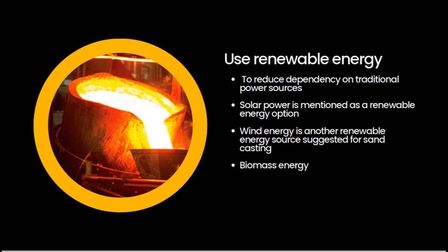Sand casting is highlighted as an efficient and environmentally friendly manufacturing process. To reduce dependency on traditional power sources, sand casting businesses can utilize various types of renewable energy. Solar power is one option, where solar panels can be installed in the sand casting plant to generate electricity for running machinery, equipment, and lighting systems. Solar thermal systems can also be used to heat operations such as sand drying and metal melting. Wind energy is another renewable energy source for businesses located in areas with sufficient wind resources, where building wind turbines can provide the electricity needed. Biomass energy can generate heat for sand drying or metal melting, using sources like wood chips, agricultural waste, or biogas.